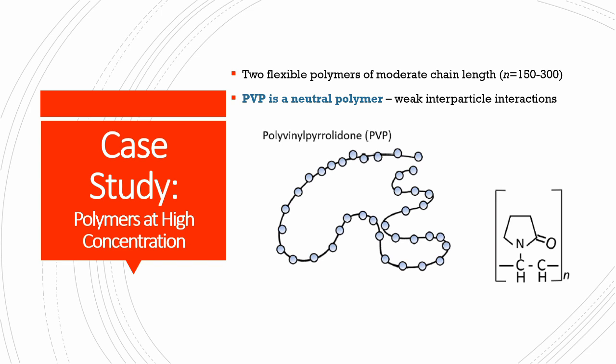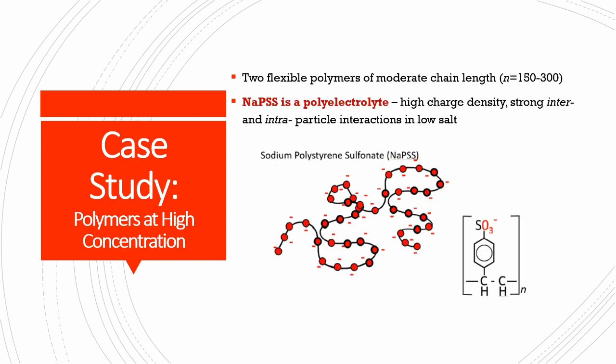Our two polymers are both flexible polymers of moderate chain length, between 150 and 300 repeats. PVP, or polyvinylpyrrolidone, is a neutral polymer and we expect weak interparticle interactions — it's a flexible chain with no fixed permanent charges. In contrast, sodium polystyrene sulfonate is a polyelectrolyte with very high linear charge density and strong inter- and intraparticle interactions, especially at low salt where there is insufficient counterion to screen electrostatic interactions. We expect more intense interparticle interactions for sodium polystyrene sulfonate relative to PVP.